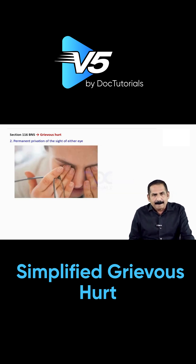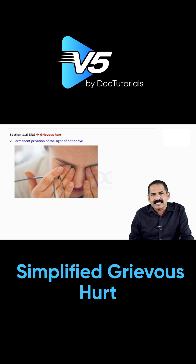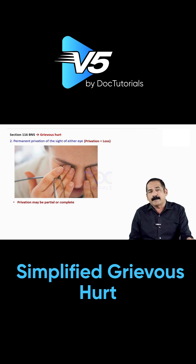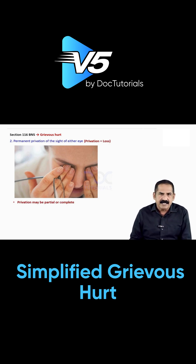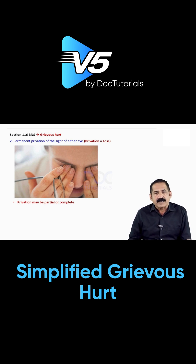Number two: permanent privation of the sight of either eye. Privation means loss. Remember, the loss should be permanent, and it may be partial or complete. For example, if a person is suffering from hemianopia, that also comes under grievous hurt.